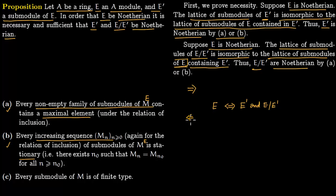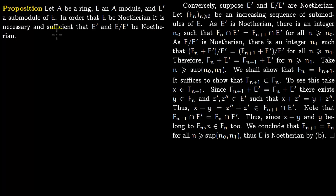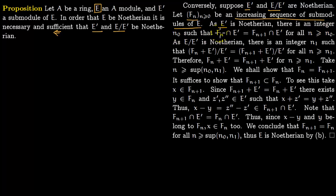The opposite direction requires slightly more effort. We will now prove sufficiency: assuming E prime and E modulo E prime are Noetherian, we want to show E is Noetherian. We start with an increasing sequence of submodules of E, and our goal is to show this sequence becomes stationary after a certain value of n.